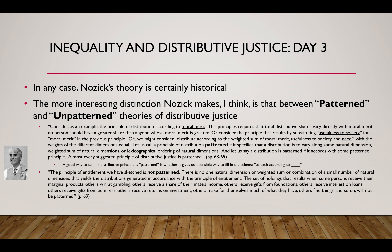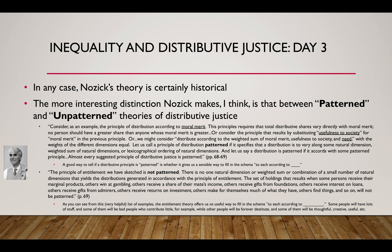In this way, the principle of the entitlement theory is very different. Utilitarianism, the difference principle, egalitarian views, principles of 'to each according to their need or merit' — those are all patterned views, but the entitlement theory is not. The entitlement theory does not give us a good way to fill in the blank 'to each according to their X.' If a society is governed by the entitlement theory, some people are going to have lots of stuff, and some of them will be bad people who contribute little — and there's not necessarily any injustice there. While other people will be forever destitute, and some of those will be thoughtful, creative, and useful — and there need not be any injustice there either. There's no natural criterion you can give to determine whether a distribution is just according to the entitlement theory, and this makes it kind of unique.